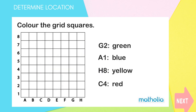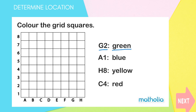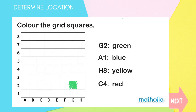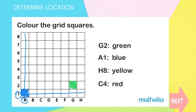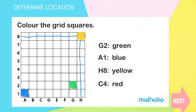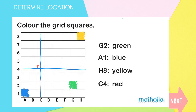Colour the grid squares. Try to point to the square before I colour it. Position G2 — first find column G, then row 2, and colour it green. Next, square A1: column A, row 1, coloured blue. Next is square H8: column H, row 8, coloured yellow. Finally, C4 red: column C, row 4, red. Did you point to the correct squares?